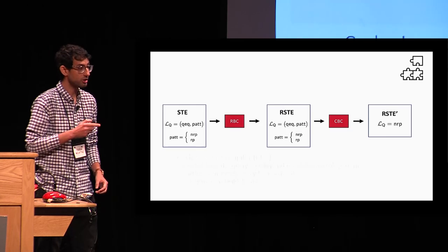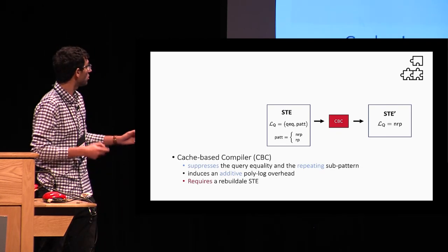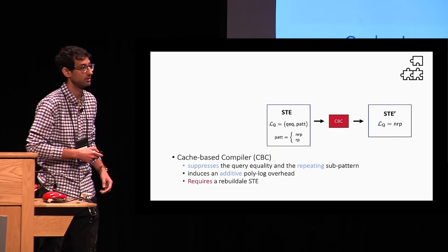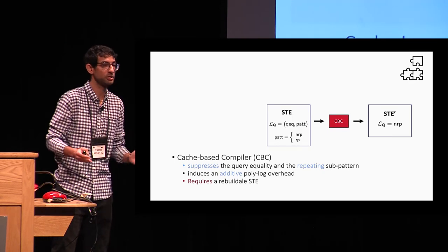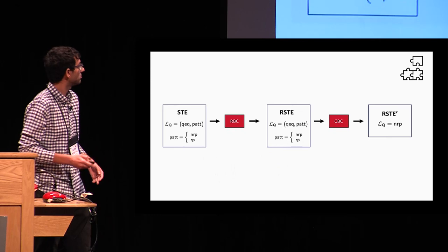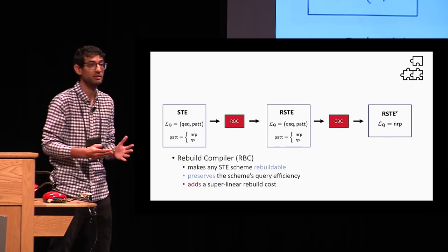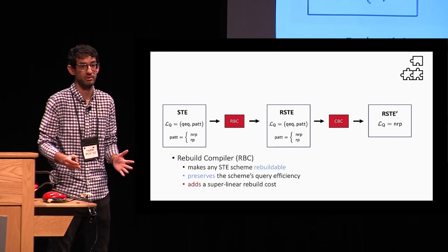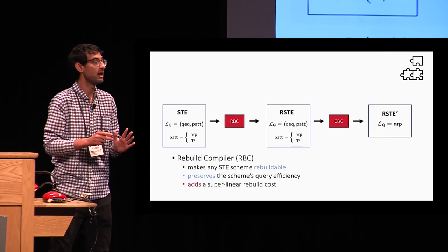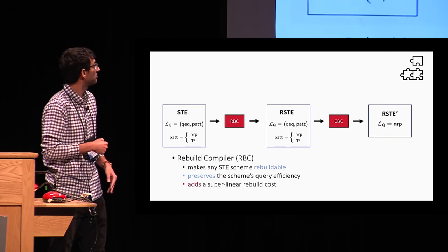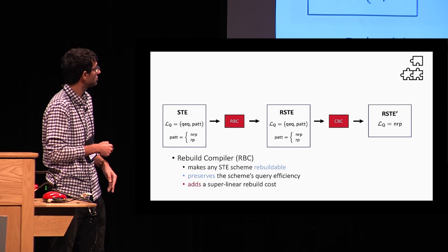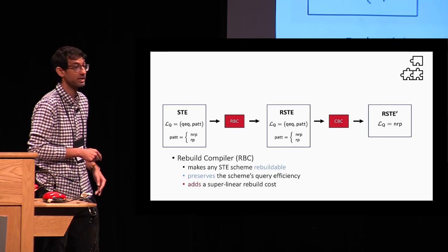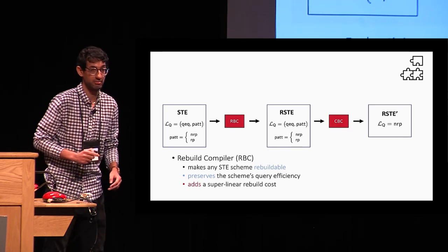In order for this to work, CBC requires that the base STE construction be rebuildable. Since most STE constructions are not rebuildable, we introduced a new technique called the rebuild compiler, or RBC for short, that makes any STE construction rebuildable. It has two main advantages: it preserves the query leakage, and it preserves the scheme's query efficiency. However, it does add a superlinear rebuild cost.